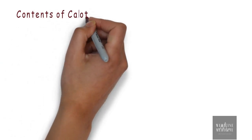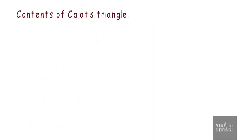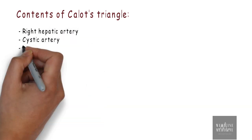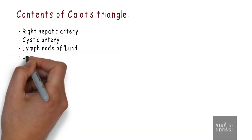Now, talking about contents of Calot's triangle, the triangle consists of right hepatic artery, cystic artery, lymph node of Lund, and lymphatics.